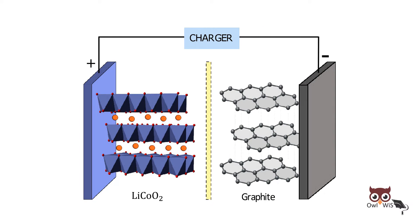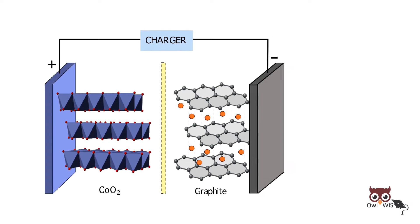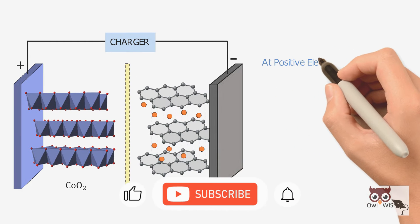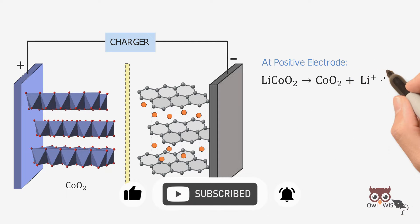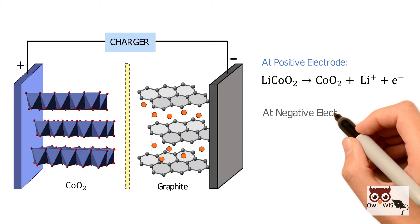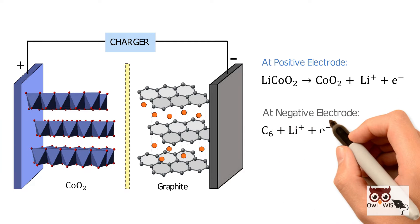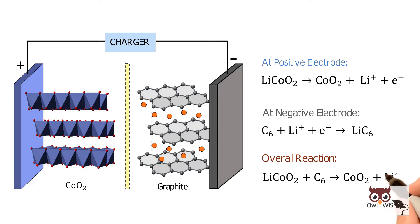During charging, lithium ions are extracted from the lithium cobalt oxide cathode, enter the electrolyte, pass through the separator, and intercalate into the graphite structure. At the positive electrode, lithium cobalt oxide produces cobalt oxide, lithium ions, and electrons. At the negative electrode, graphite combines with lithium ions to form lithiated graphite. Below is the overall reaction.